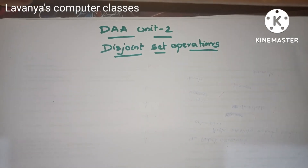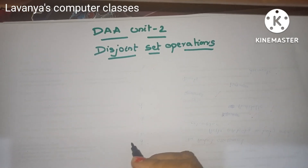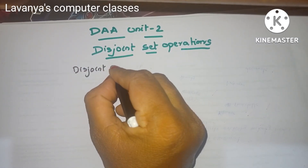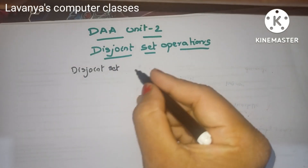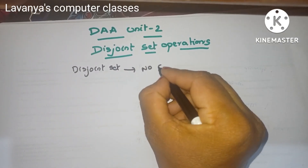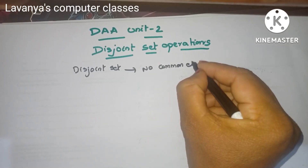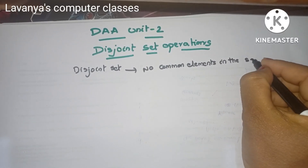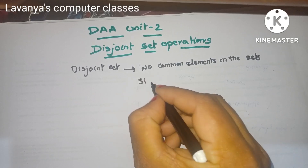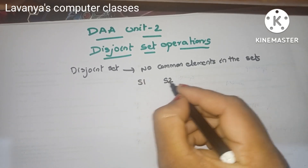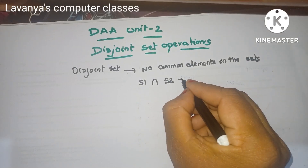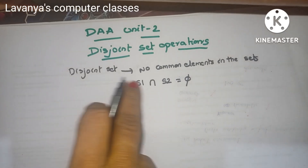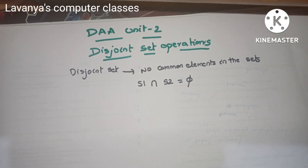What is the meaning of disjoint set? A set is a collection of elements. Disjoint means no common elements — it is not possible to join them. So a disjoint set means no common elements in all the sets. For example, S1 is the first set and S2 is another set with no common element. That means S1 intersection S2 equals empty set (∅). If there are no common elements in both sets, those sets are known as disjoint sets.